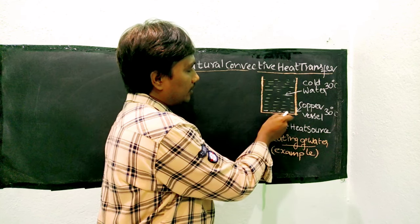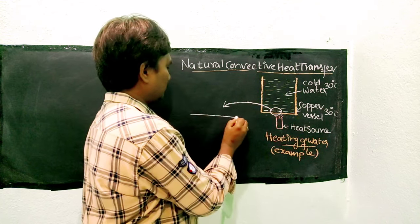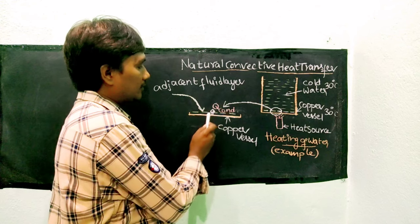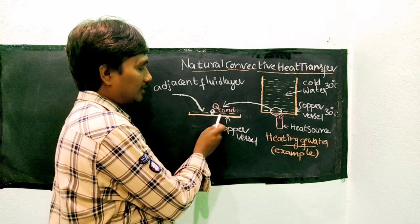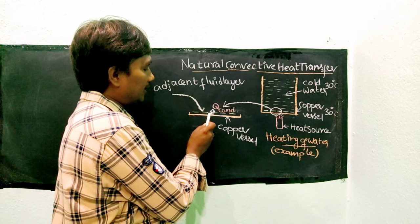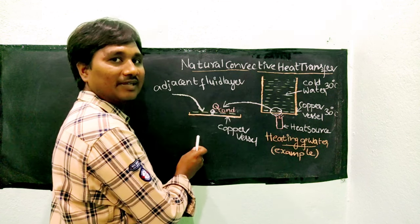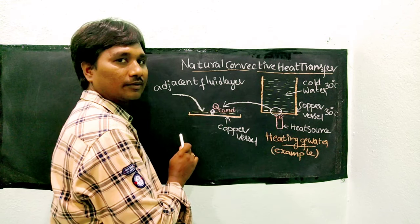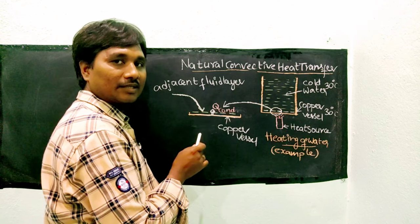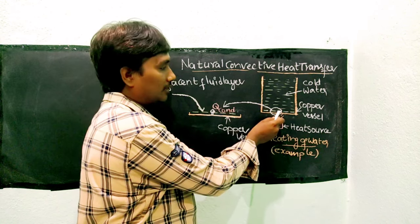Observe this stage: copper vessel and adjacent fluid layer. Whenever this copper vessel receives heat and its temperature rises, heat is transferred from the solid surface to the immediate fluid layer adjacent to the copper vessel. This fluid layer receives heat by means of conduction heat transfer, because initially there is no fluid motion. That is why heat is transferred from the solid surface to the immediate fluid layer by means of conduction only.